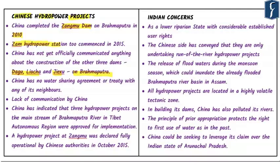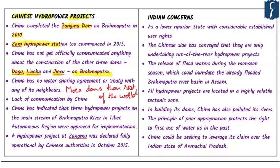China is also building the Zam Hydropower Station, which will be the largest dam on the Brahmaputra. The core of this debate is that China as an upper riparian state claims the right to use this water, while it should also consider the needs of lower riparian states including India, Bangladesh, and Myanmar. China has built more dams on its rivers than the rest of the world combined.